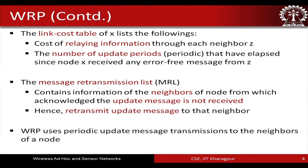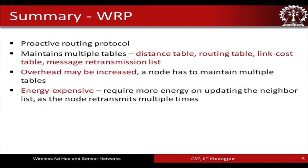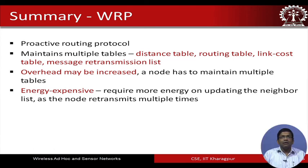WRP uses periodic update message transmission to neighbors in order to apprise them about changes in the information contained in each of these tables. In summary, it maintains a distance table, routing table, link cost table, and message retransmission list. Overhead may be increased as a node has to maintain multiple tables — unlike DSDV, which maintained only a single table. WRP requires more energy because more updates and more lists lead to more energy consumption, which is a drawback over DSDV.